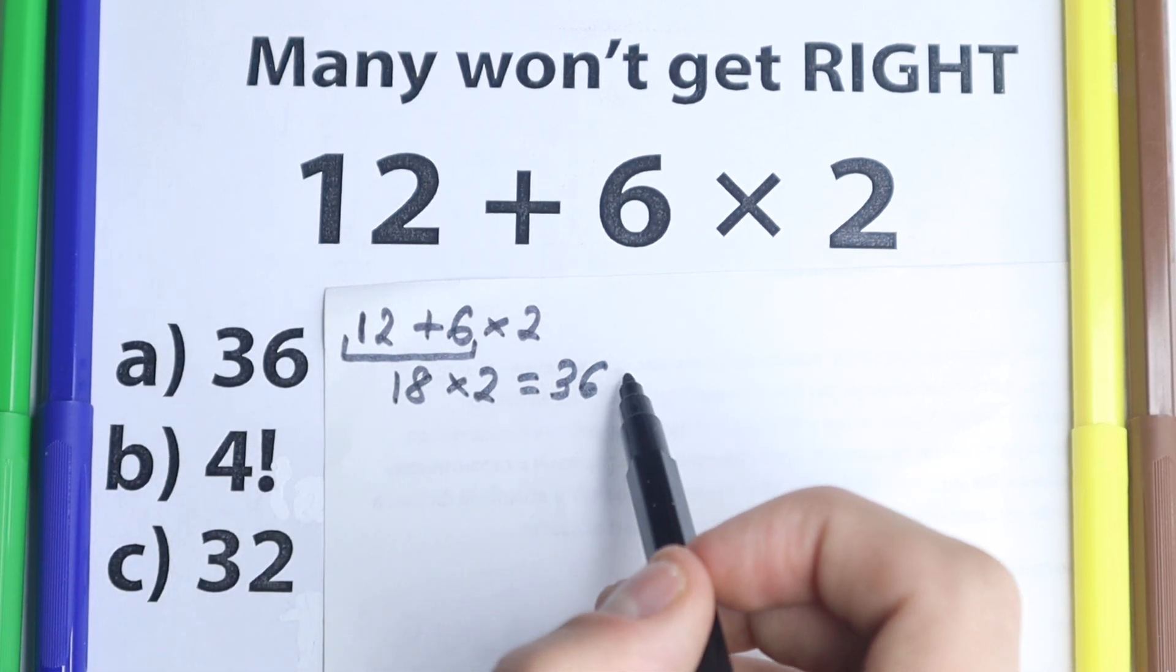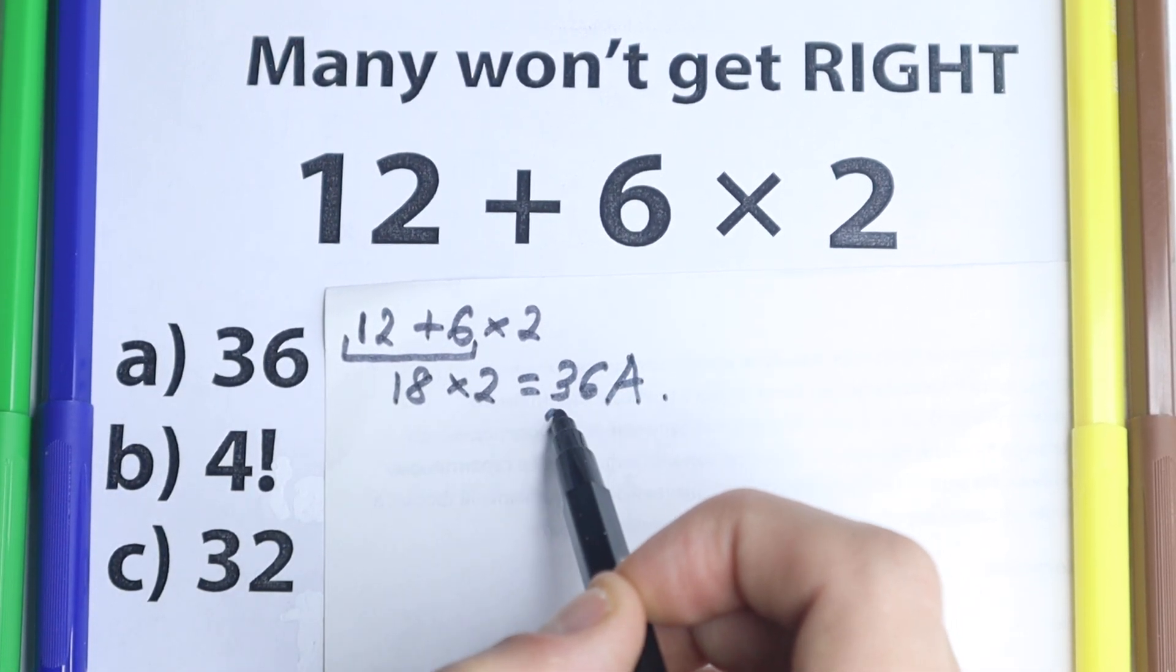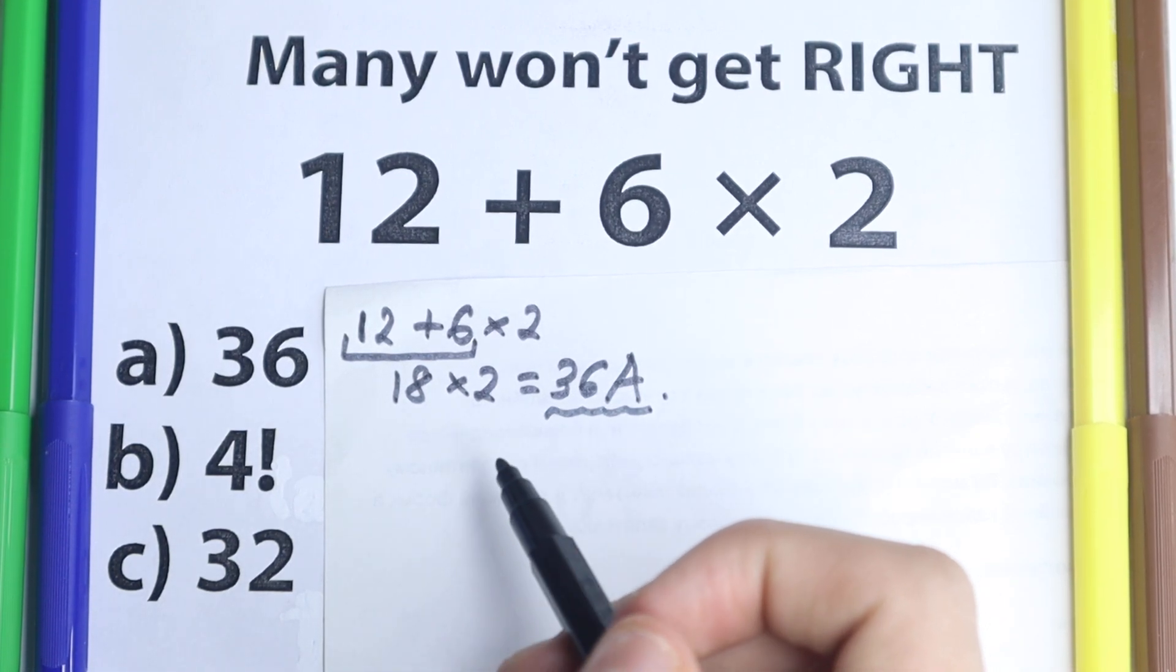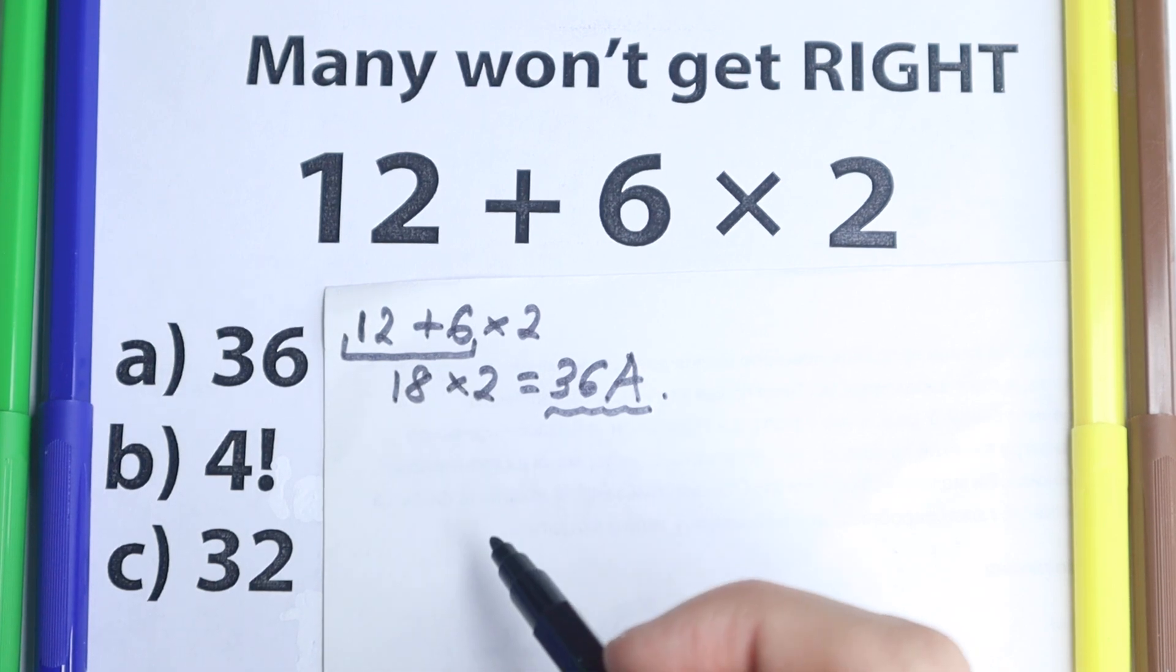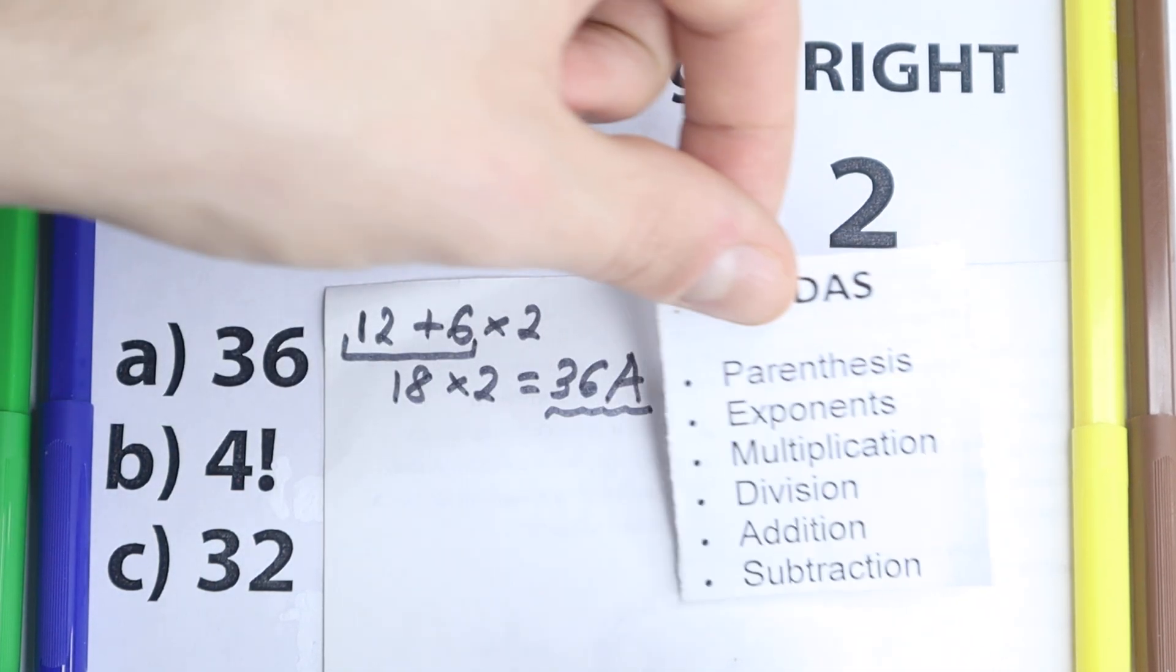And they say, okay, we have this option right here, this is option A, and this is a correct answer. But then I ask them, okay, what about order of operations? Because it's not the correct order of operations. And for this answer I have this PEMDAS order of operations.